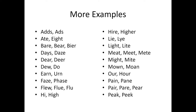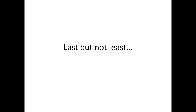More homophones include: do and dew, earn and urn, phase and faze, flew and flu, high and hi, lie and lye, light and lite, meet and meat, might and mite, moan and mown, our and hour, pain and pane, pair and pear and pare, peak and peek — and there are many, many more.